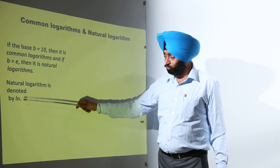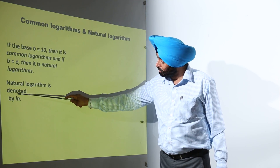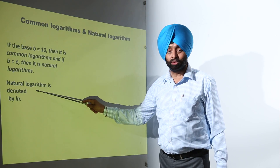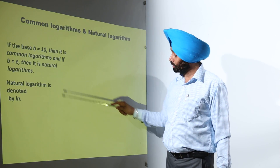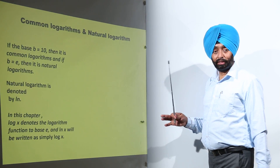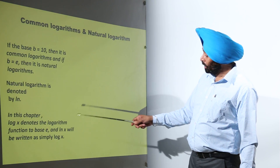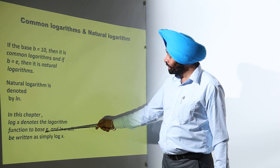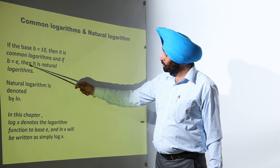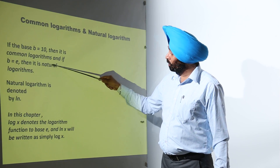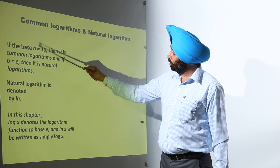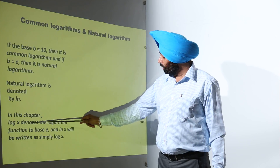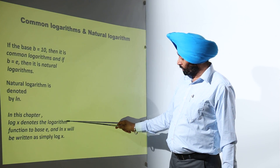Natural logarithm is denoted by 'ln' — we write just 'l' and 'n' — this represents natural logarithm. Now in this chapter, log x denotes the logarithm function to base e. It means we are going for the natural logarithm, not the common logarithm.